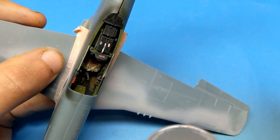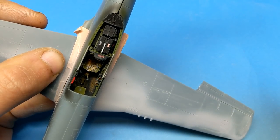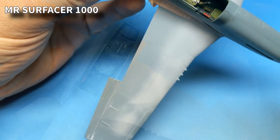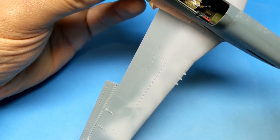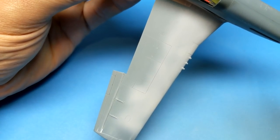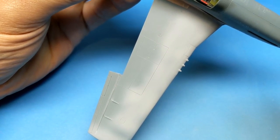That doesn't mean that putty doesn't have its place. If you're filling somewhere that has lots of detail around it that you don't want to lose, that's an ideal place to use putty, especially like inner wing roots and things like that. Now, after a few hours of filling, sanding, priming, repeat, I'm ready to move on to paint.